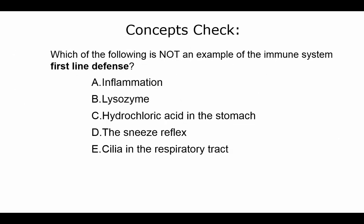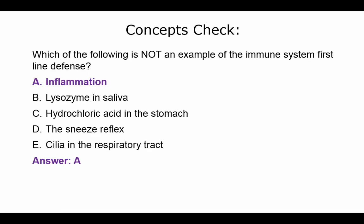Quiz question: which of the following is NOT an example of the immune system's first line of defense? The answer would be inflammation — inflammation is part of the second line of defense, not the first.